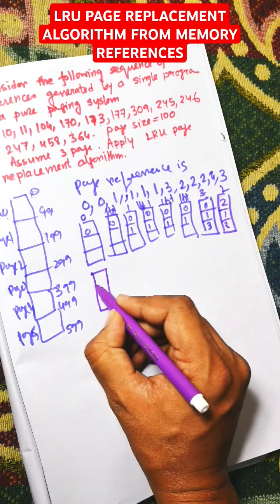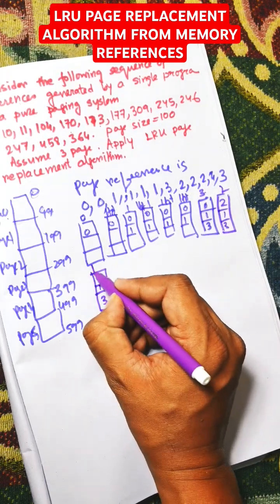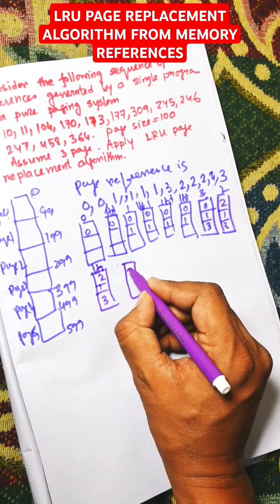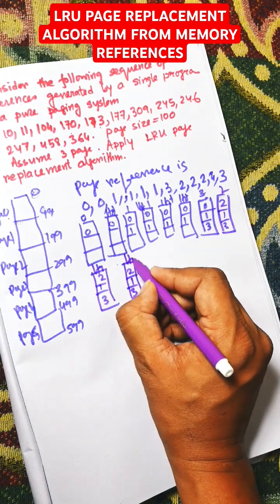Now 2 is there, that is again hit. Again 2, this is also hit. Now 4 will be replaced.